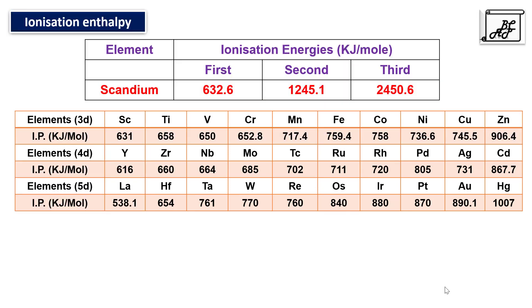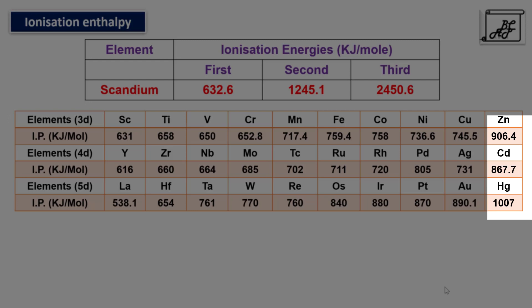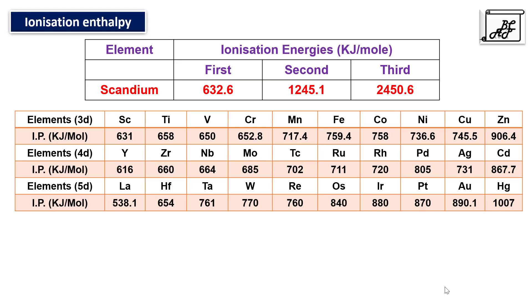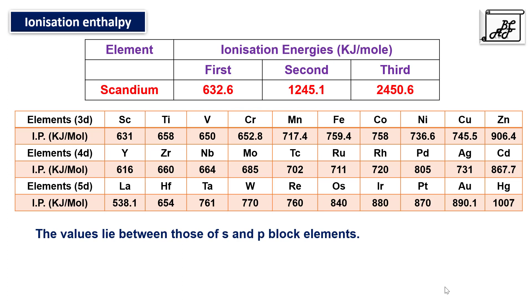The last column — zinc, cadmium, and mercury — has the highest ionization energy values. This is due to the extra stability associated with their completely filled n-1 d-shell and ns orbitals. When we compare d-block ionization values to those of s and p-block elements, we find that d-block values lie between those of s and p-block elements. Along with ionization enthalpy, we also need to consider oxidation states.